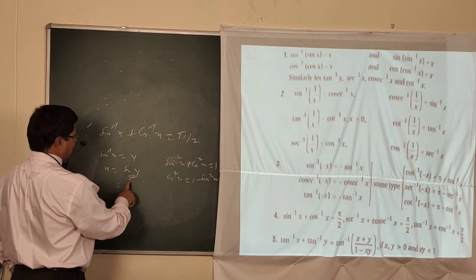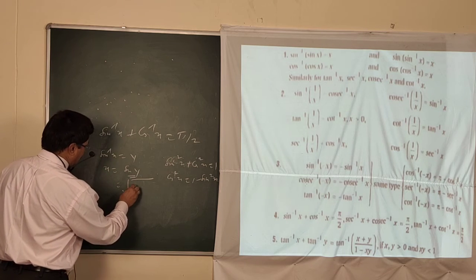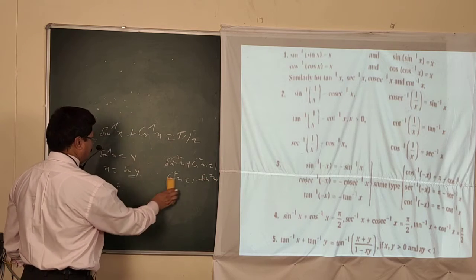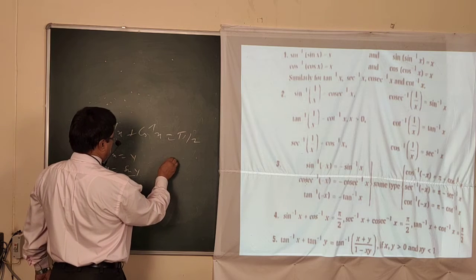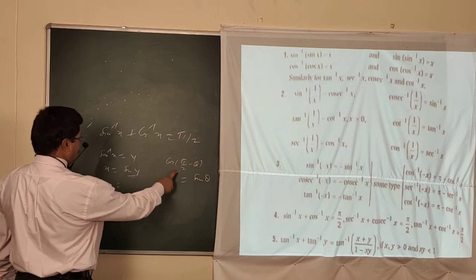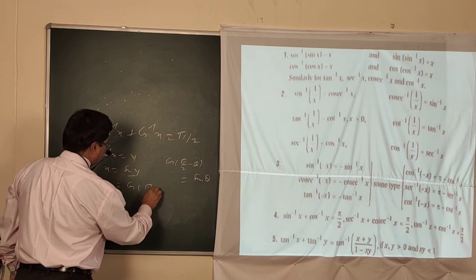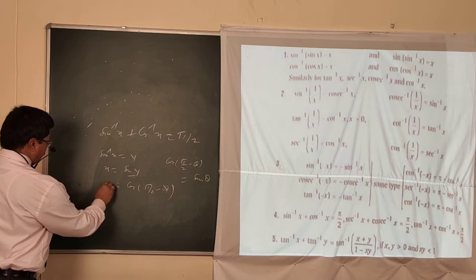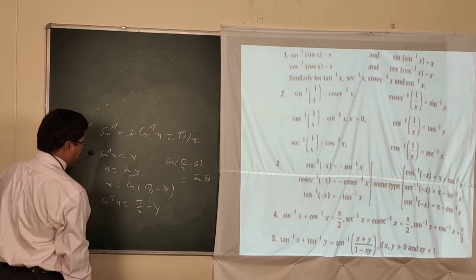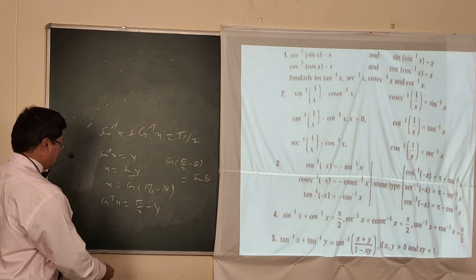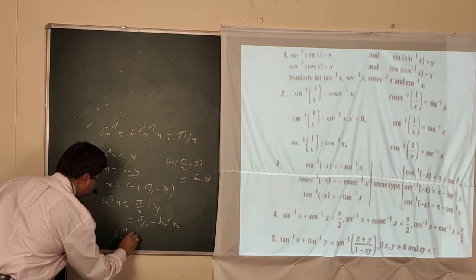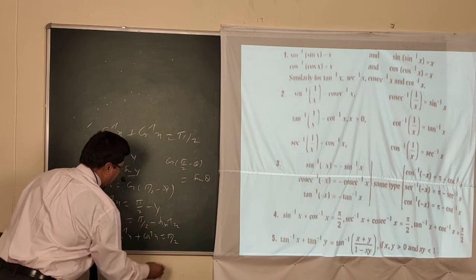But here we need to convert to the form with π/2 — this is the complementary form. You know that cos(90° - θ) = sin θ, i.e., cos(π/2 - θ) = sin θ. So x = cos(π/2 - y). Transferring cos to the other side: cos⁻¹x = π/2 - y. Since y = sin⁻¹x, we have cos⁻¹x = π/2 - sin⁻¹x. Transferring, we get sin⁻¹x + cos⁻¹x = π/2.